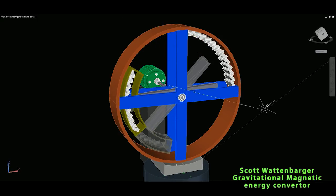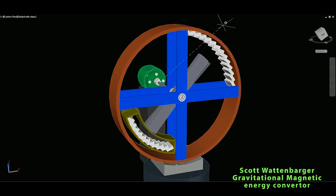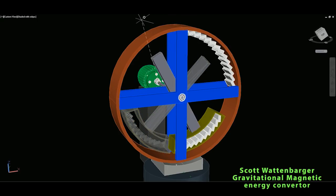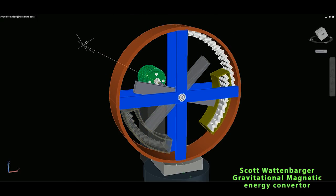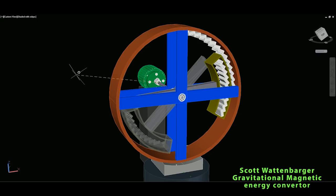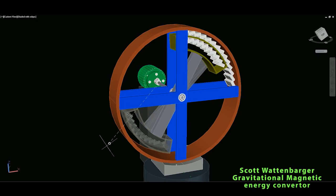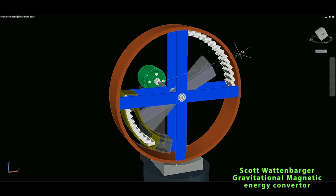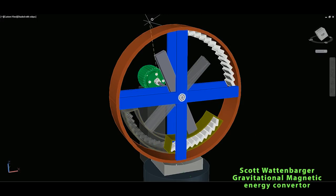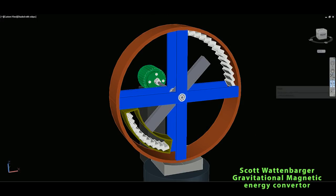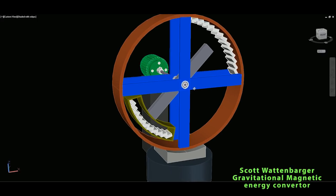And after this point, of course, gravitational force will help us even more. We will continue this rotation until this point where, again, repelling force of the permanent magnets would additionally accelerate this, and this should spin indefinitely in such a way.